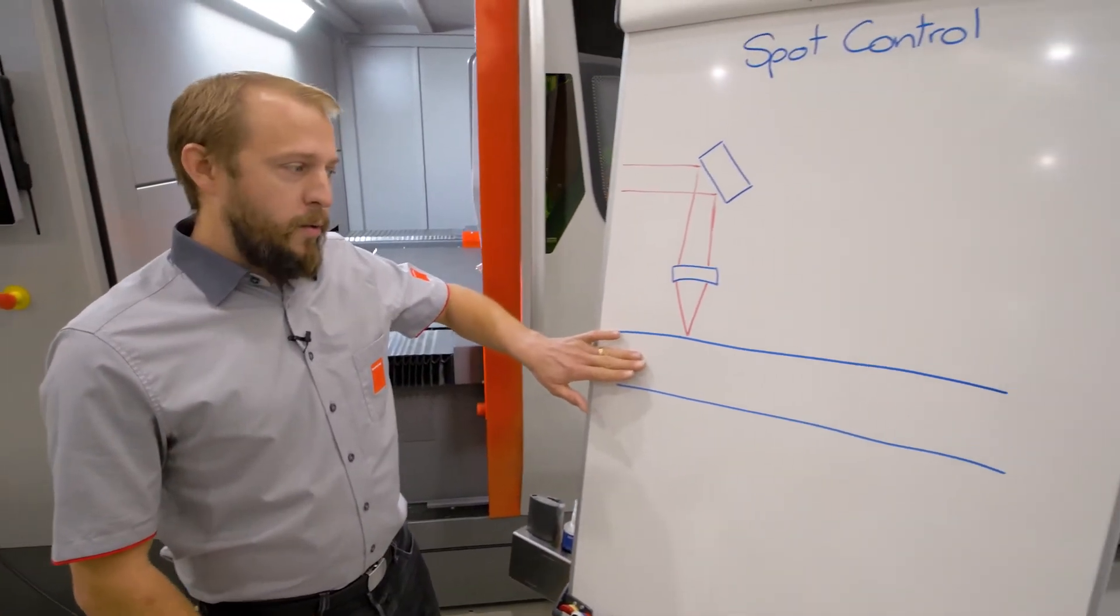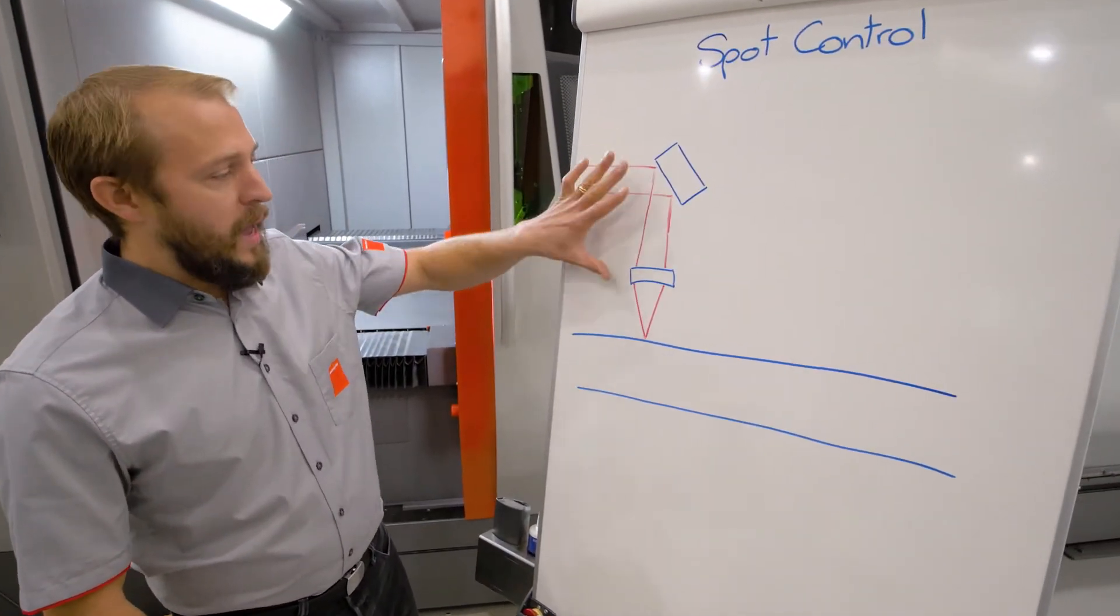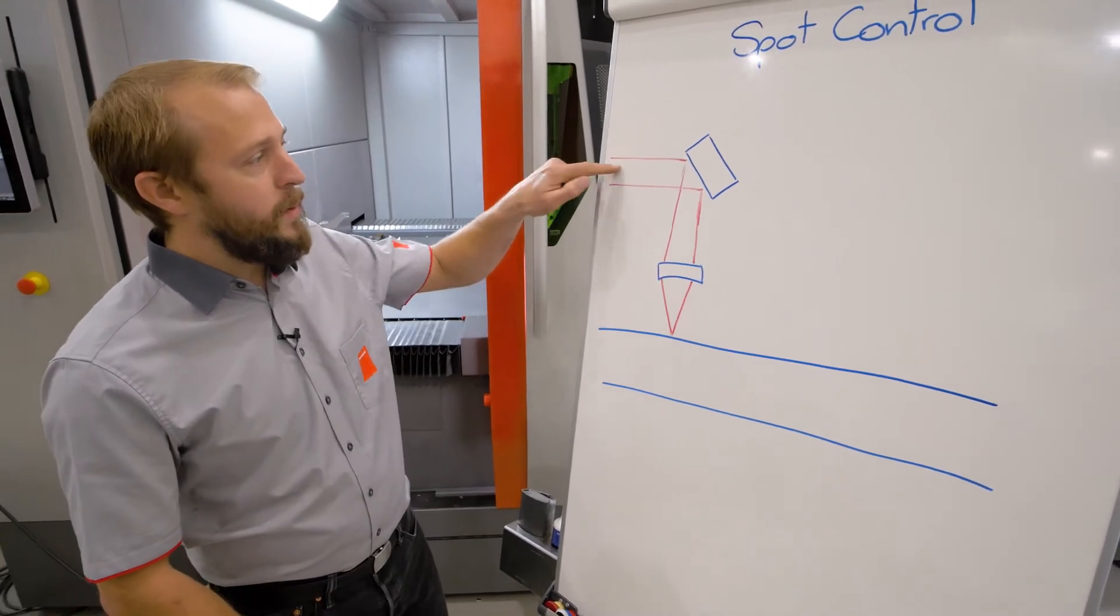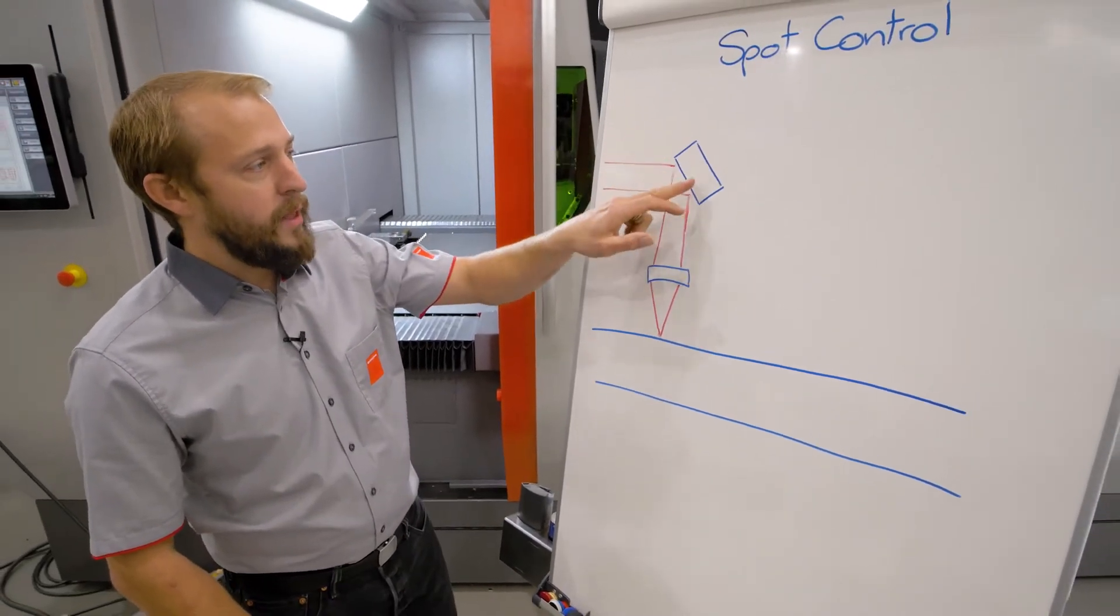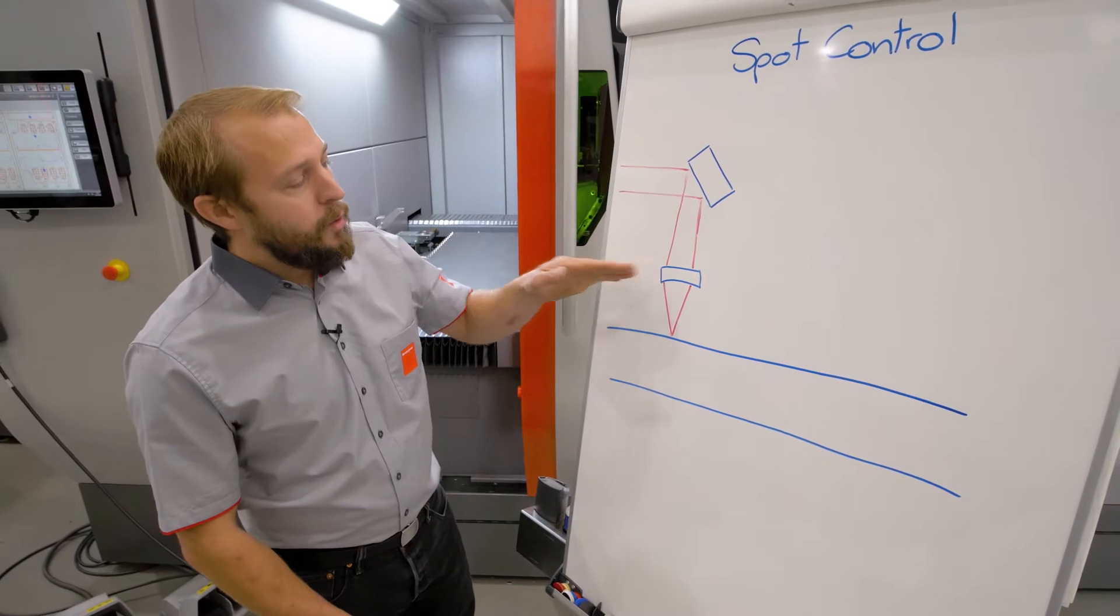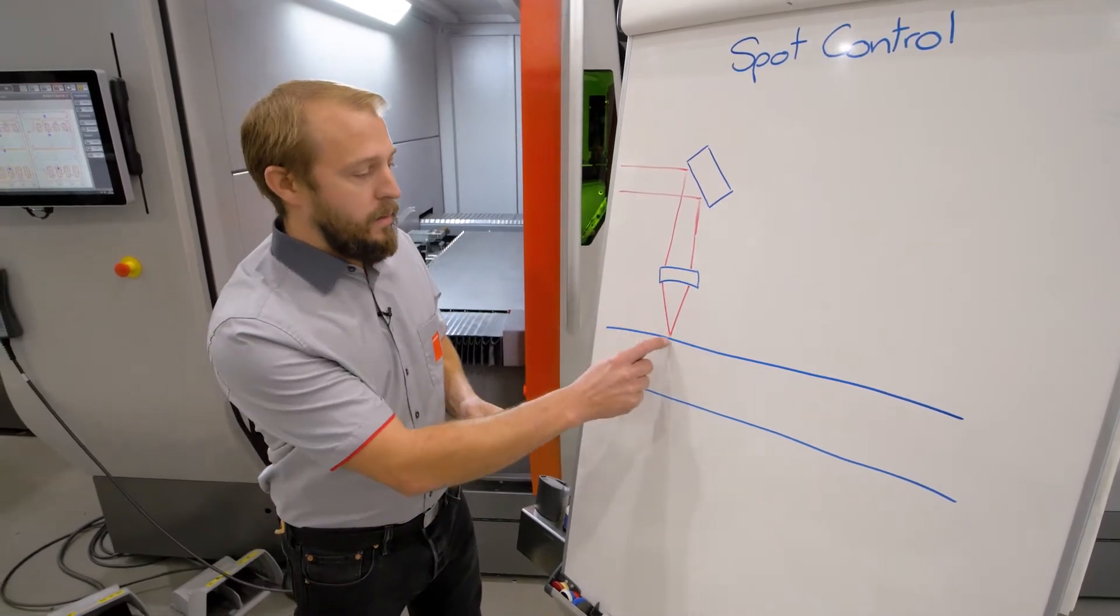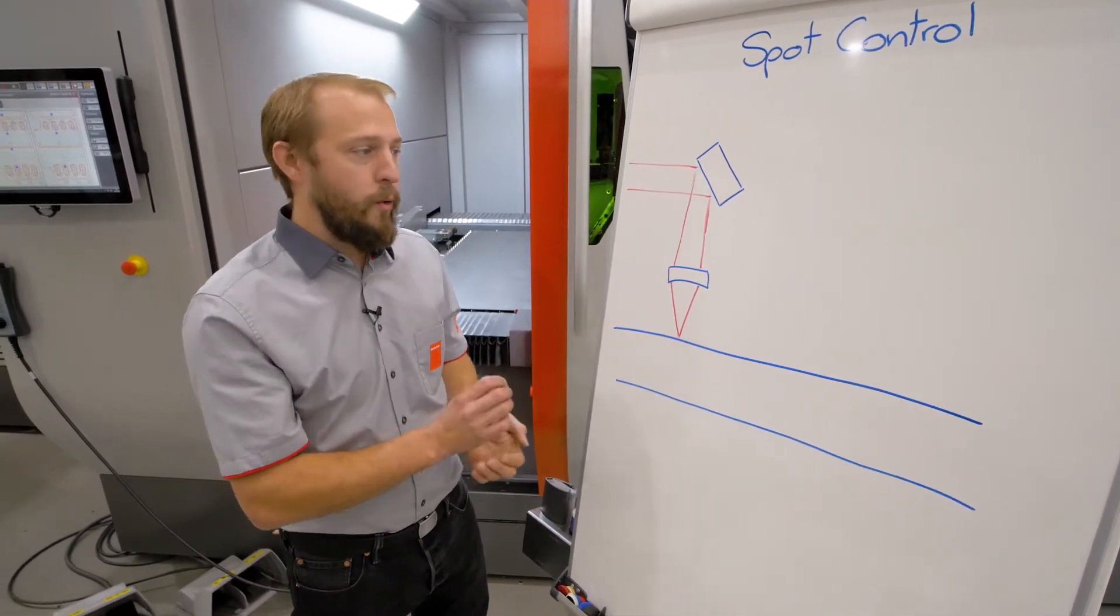So here we have our material that has to be cut, here we have our cutting head. Our beam is entering here, being deflected by a deflecting mirror, going through our lens, being put on our small focal spot.